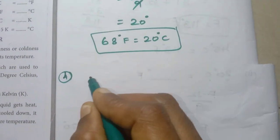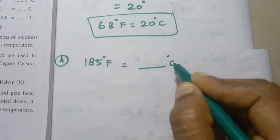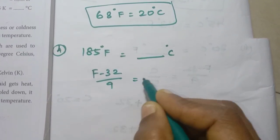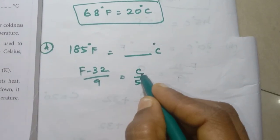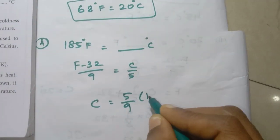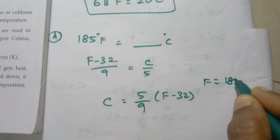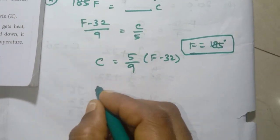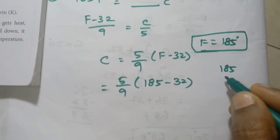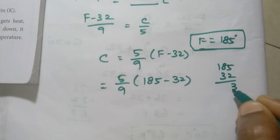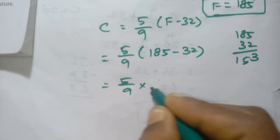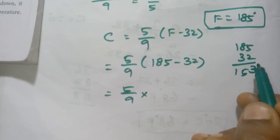Fourth problem: 185 degrees Fahrenheit equals how many degrees Celsius? Using the formula C equals 5 by 9 into (F minus 32), substituting F equals 185: 185 minus 32 equals 153. So C equals 5 by 9 into 153. Cancelling, 9 goes into 153 — the result gives the Celsius value.